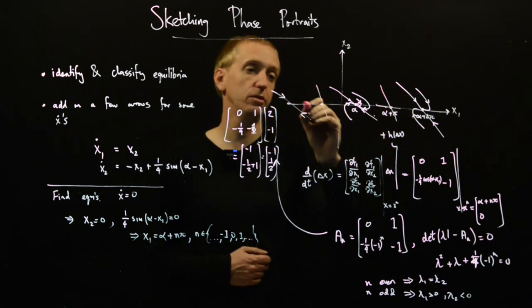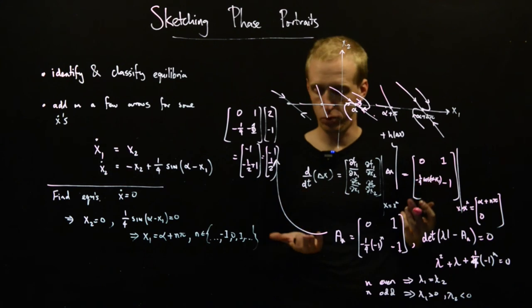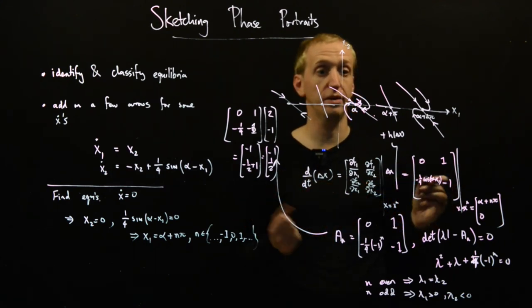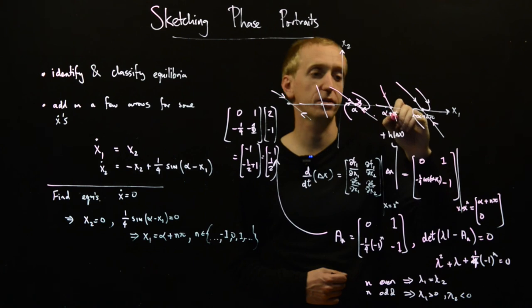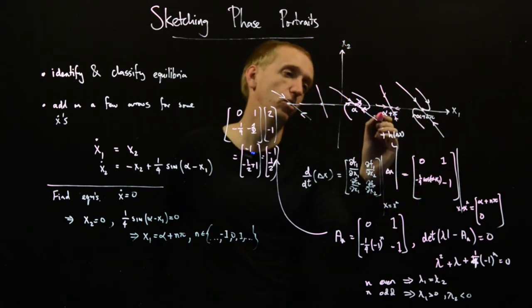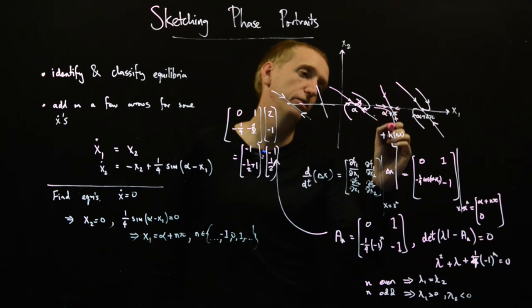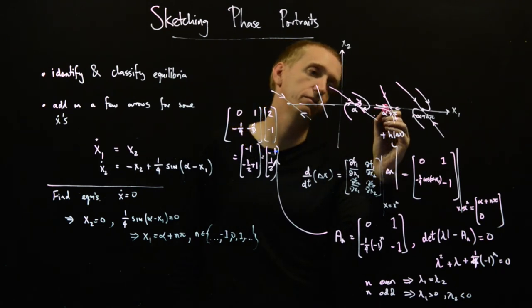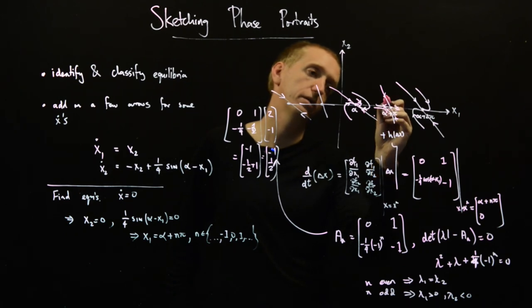And then one of them will be stable and one will be unstable. So let's just say it looks something like that. And then we would fill on the corresponding... No, sorry. That one's unstable, say. And we get something that looks like this.